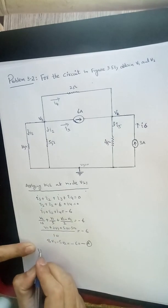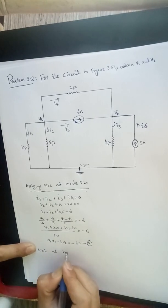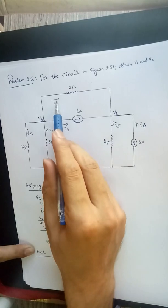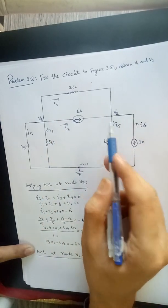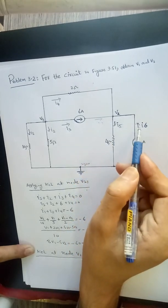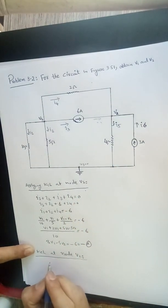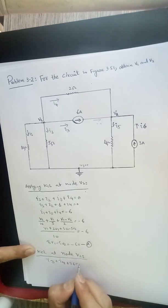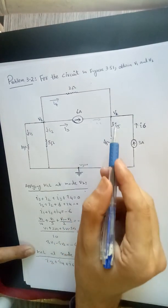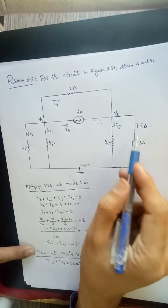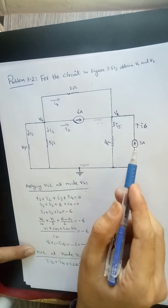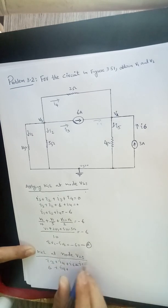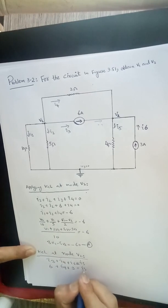Now applying KCL at node V2. So KCL at node V2. We basically have I5, I4, I6, I3. I3 entering, I6 is entering, and I4 entering. So we can write I3 plus I4 plus I6 equal to I5. I5 leaving this particular node, so these three currents enter. We know I6 is 3 and I3 is 6. So we can simply write 6 plus I4 and I6 is 3 equal to I5.